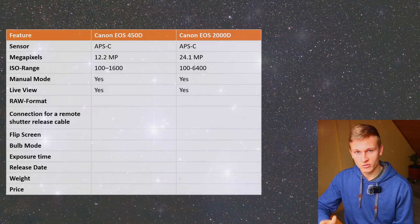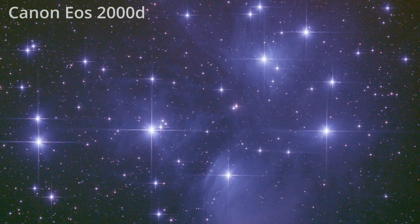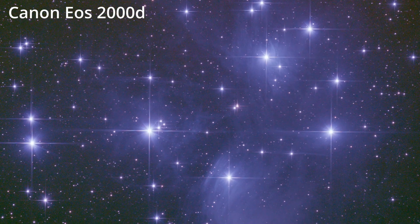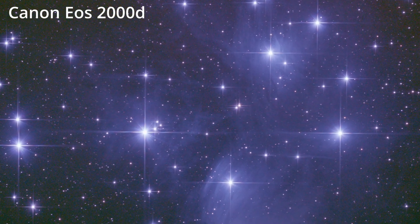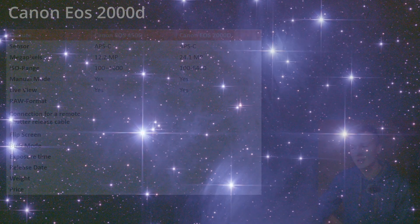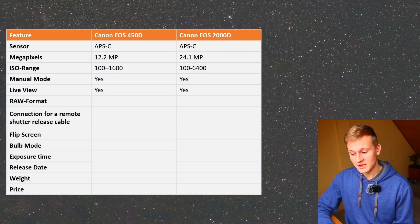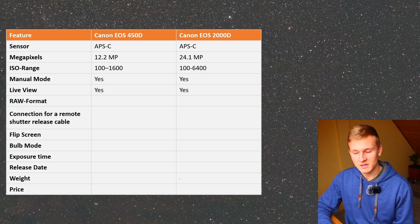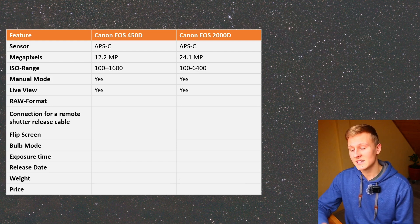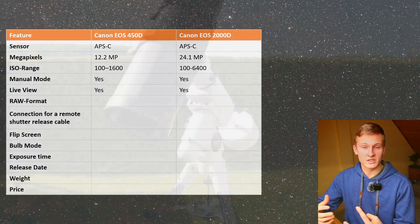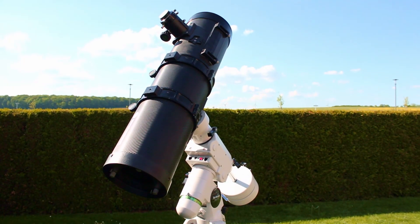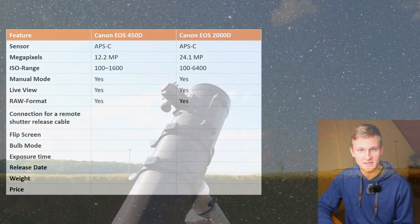The next aspect is RAW capture. It's very important that your camera can capture images in RAW, because in astrophotography we like to stack our images — I personally use Deep Sky Stacker for this, and you can only stack images captured in RAW. RAW is also very important in post-processing because it's easier to bring out more structures and details in your final result. Both cameras can capture images in RAW.